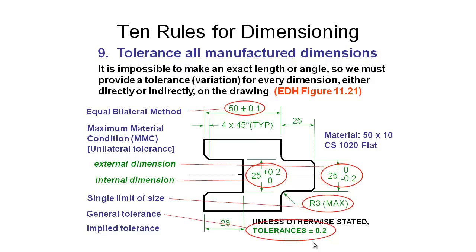One final comment is with regards to implied tolerances. So in this example here, we have a certain material that we've specified and this is 50 by 10 CS1020 flat steel. This is a type of steel. So inherent in the manufacturing process of this material are some tolerances. And if you go and ask the manufacturer, they'll be happy to tell you what those tolerances are. This is not something that you can have an effect of because you're just a customer buying this particular material that they're providing.